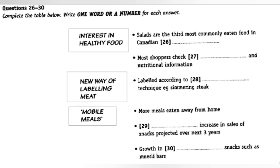The most significant trend is that Canadians are definitely interested in healthy food. For example, salads are the third most commonly eaten food in Canadian restaurants. Organic food is definitely moving into the mainstream compared to a few years ago, and a recent survey showed that four out of five shoppers said they check the fat and nutritional information on the packet when deciding what to buy.